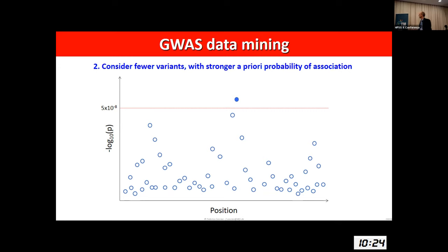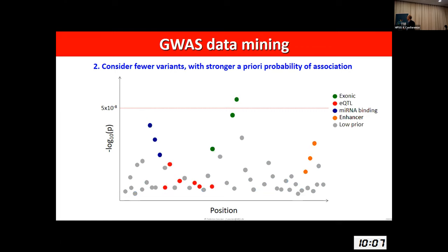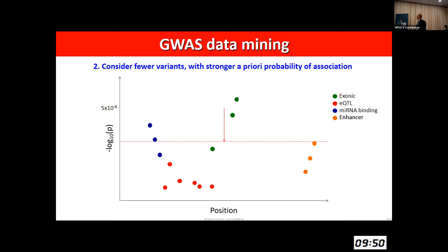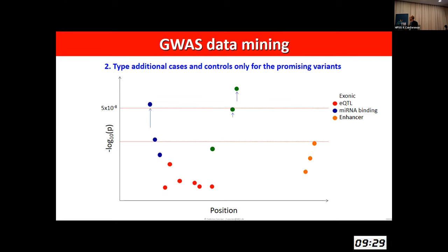A trick we used is to try to mine GWAS data once you have them. One possible approach is to consider fewer SNPs — specifically those with stronger a priori probability of association — for example by functional annotation. You consider all your SNPs, apply an annotation that takes into account their predicted function, and remove those predicted to have low prior probability. This means you are considering fewer SNPs, effectively lowering the significance threshold. It helps to select additional candidates, and then you do additional genotyping in additional cases and controls, but only for the promising variants, which is a lot less expensive. At the end you always want to see a p-value to confirm what you are assessing.